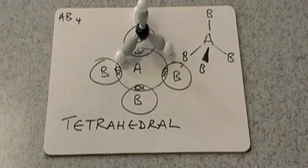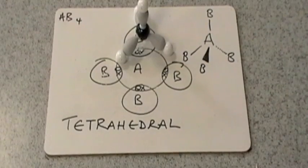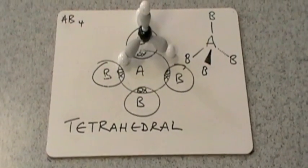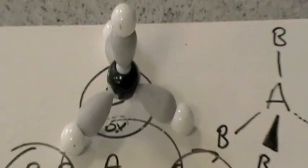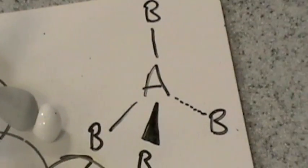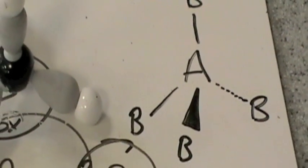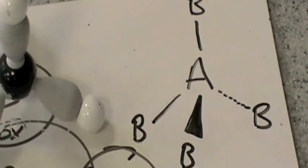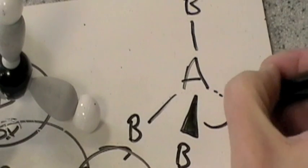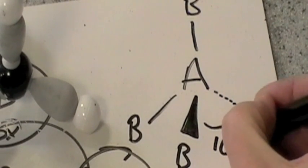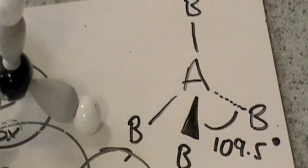So you can see there, we've got our, let's see if I can zoom in on that. And what we're saying is the bond angle is not 90 degrees anymore. It's actually, it's not, because it's not planar. It's 109.5 degrees.